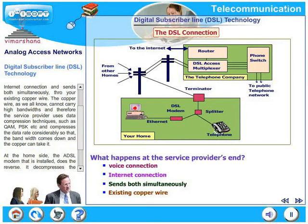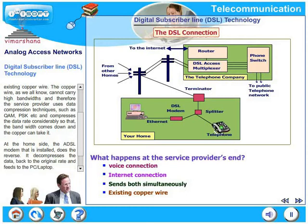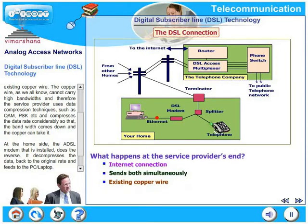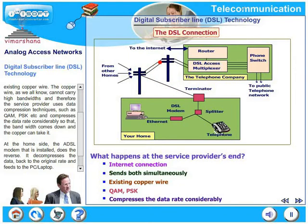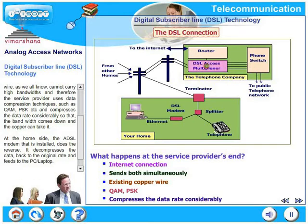And therefore, the service provider uses some sort of a data compression technique, such as QAM, PSK, etc., and compresses the data rate considerably so that the bandwidth comes down and the copper can handle this. At the home side, the ADSL modem that is installed does the reverse, as we have seen just now.